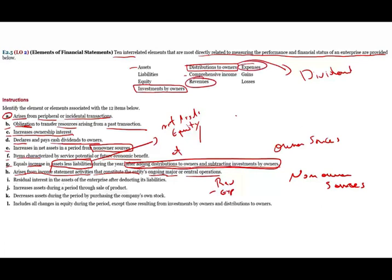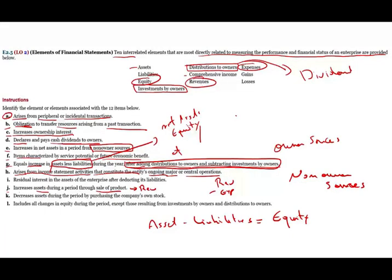I: residual interest in the assets of the enterprise after deducting liabilities — that means assets minus liabilities. What is assets minus liabilities equal to? Equity, or net assets of the business. So the answer is equity. J: increase in assets during the period through the sale of the product. When you sell the product, when you generate sales, it's called revenues — ongoing operation revenues.